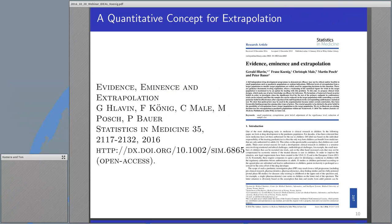I will now focus on a paper of ours which has just been published in Statistics in Medicine. This is joint work with Gerald Lavin, Christoph Male, Martin Bosch and Peter Bauer. You can access the paper freely from the Statistics in Medicine web page, and the link to the paper is given on the left-hand side on this slide. The paper is called Evidence, Eminence and Extrapolation.